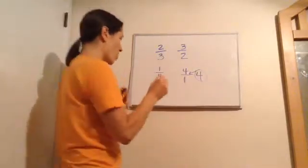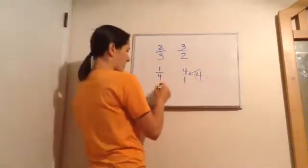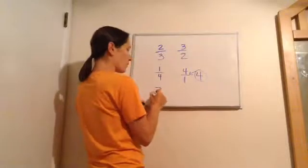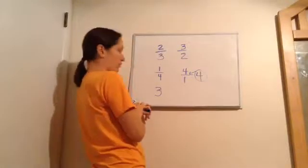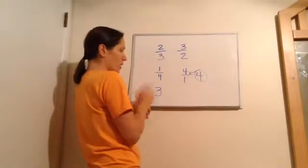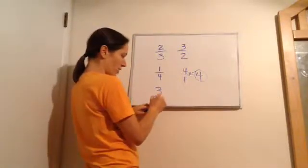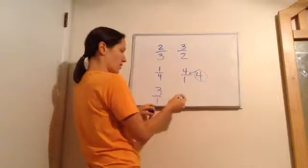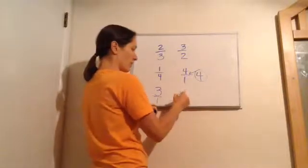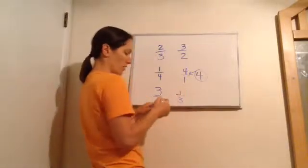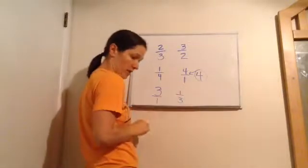So if you were to see the number three, what's the reciprocal of three? Well, three is really three over one, so the reciprocal would become one over three.